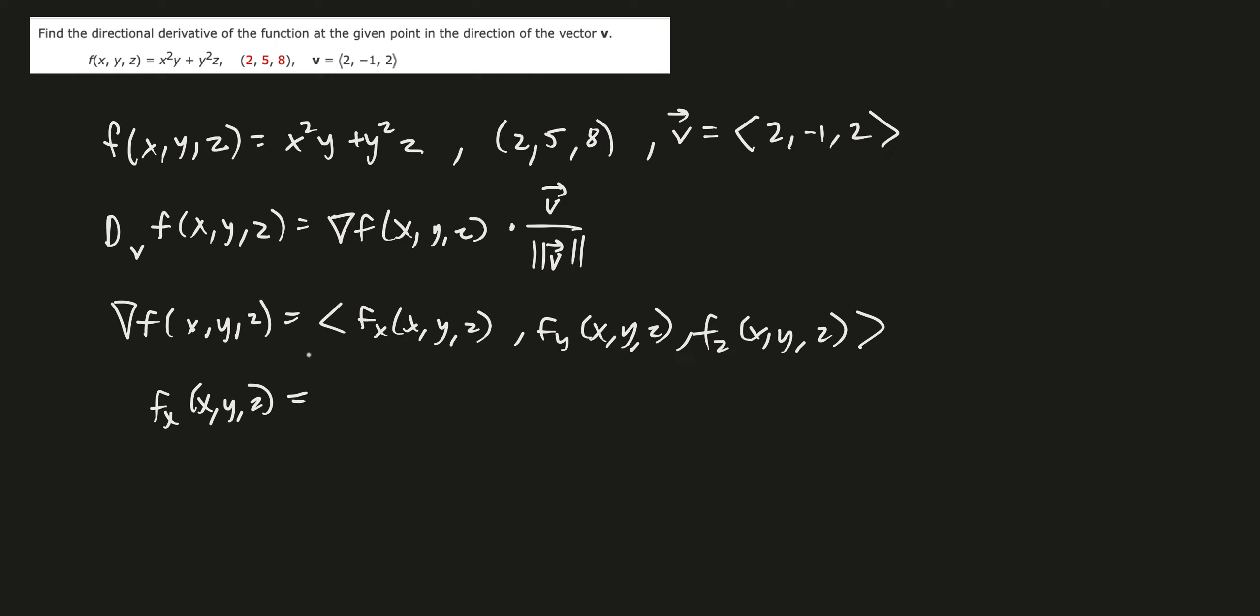Partial derivative with respect to x is just going to be treating y and z as a constant. So it's y times 2x plus, so y and z is constant, so it's 0. So 2xy.